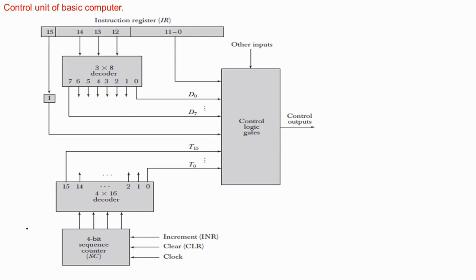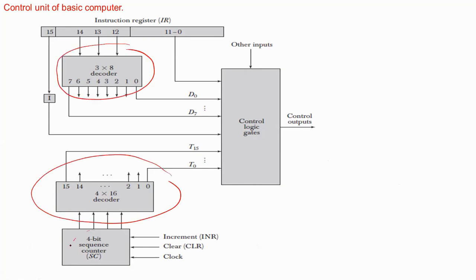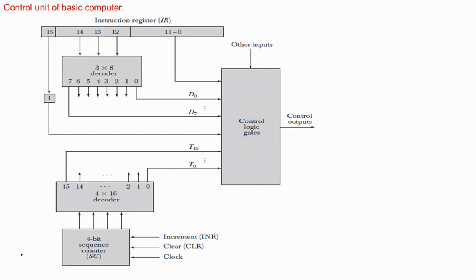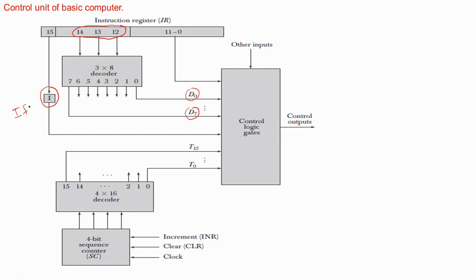The control unit of the basic computer consists of two decoders, a sequence counter, and control logic gates. An instruction read from memory is placed into the instruction register, which is divided into three parts. Bits 12 through 14 are applied to a 3x8 decoder that generates outputs d0 through d7. Bit 15 is applied to a flip-flop called the i flip-flop. All these outputs along with bits 0 through 11 are applied to the control logic gates.